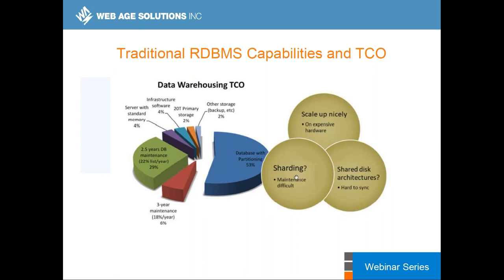Traditional RDBMS approaches have downsides — they are either difficult to maintain or expensive. Scaling up by buying a bigger box is a large investment, and synchronizing data using shared-disk architecture can be hard. These things may not be suited for relational databases at big data scale. HiveQL offers a natural transition from traditional RDBMS — whether DB2, Oracle, or whatever you're using. If you start dealing with big data and data engineering tasks, you'll probably need to look at Hadoop, Hive, and Impala.